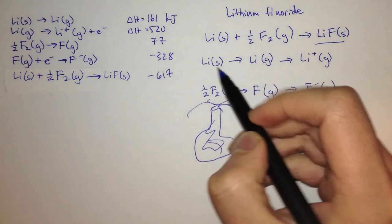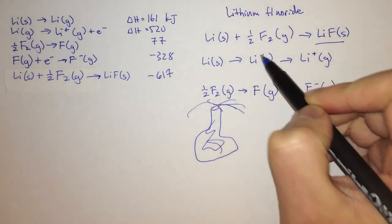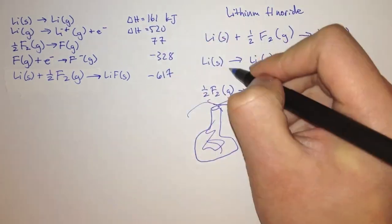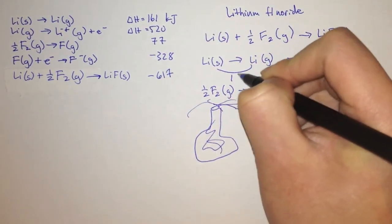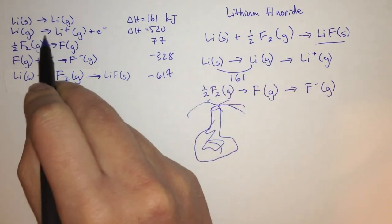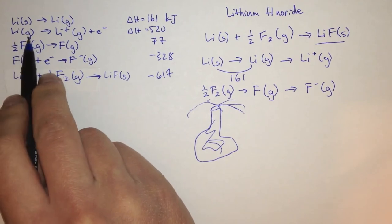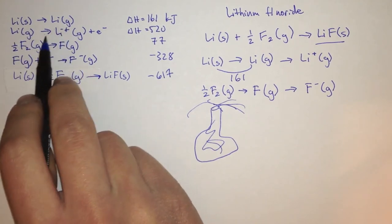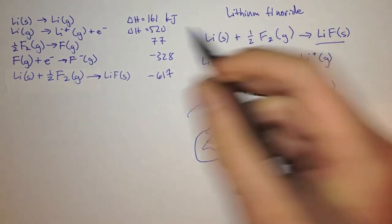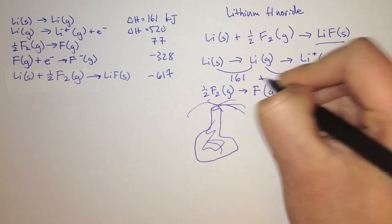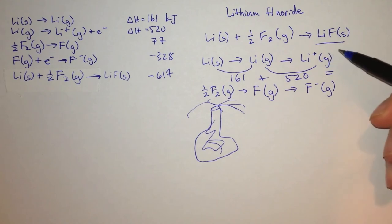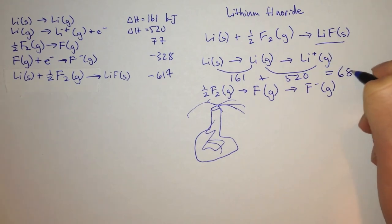Lithium has to go from a solid to a gas, and to do that we have to give it 161 kilojoules. Then for lithium gas, we take away one of its electrons, so we have the lithium missing an electron — that is 520 kilojoules. We add these up, and the heat of formation of a gaseous lithium ion is 681 kilojoules.